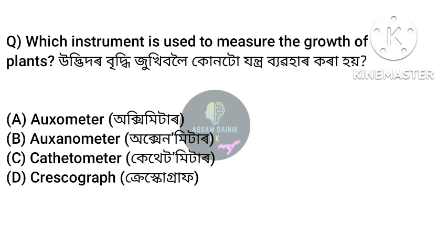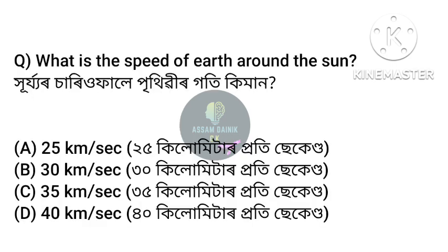What is the speed of Earth around the sun? Option B: 30 km per second.